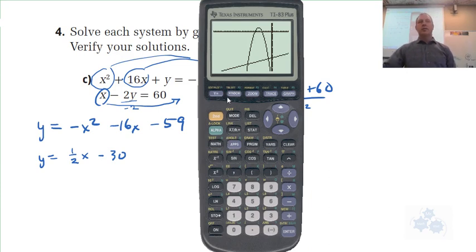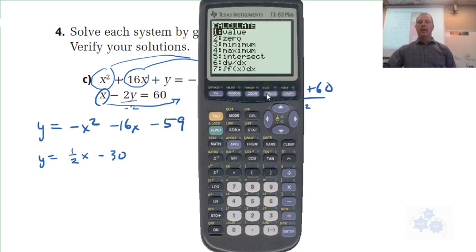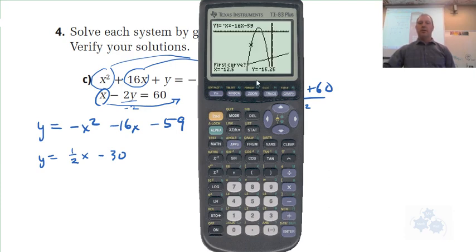So in solving a system, we do want the intersection points, okay, because we have Y and x. There's two variables there. So how do we do that? Second function trace. That gets us to the Calculate menu. Go down to number five. First curve, it'll say, you hit yes. Second curve, yes. Guess? Sure, let's have it guess this intersection point. So hit enter one more time when the cursor is nearby, and x equals negative 14.5 and negative 37.25. Okay?